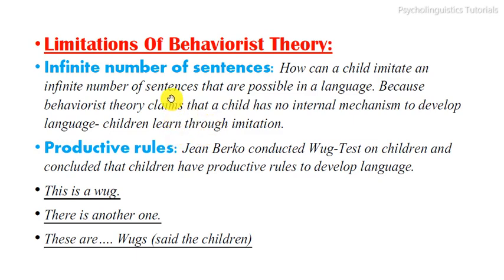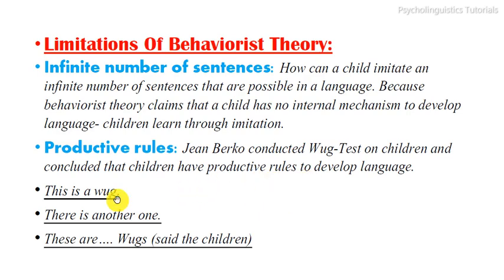The second limitation concerns productive rules. According to Jean Berko, children have productive rules to develop language. She conducted a test called the Wug test. For example: 'This is a wug. There is another one. These are...' — and children completed it by saying 'wugs.'